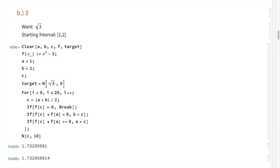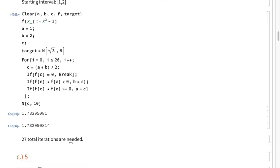Problem b: we want the square root of 3. Using the same thought process, √3 lies somewhere between 1 and 2, which is our interval. We define the function, set our starting interval variables, redefine the target variable to equal √3, and run the same code. We evaluate to 10 digits of precision and find that a grand total of 27 total iterations of the bisection method are needed to reach the desired precision.